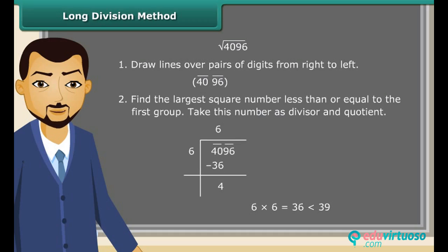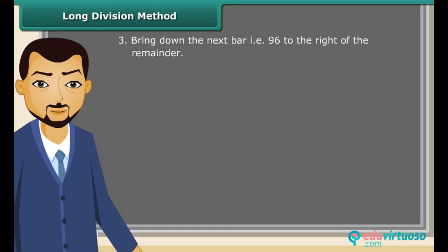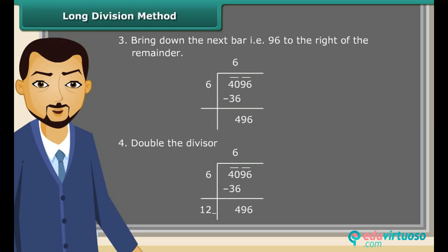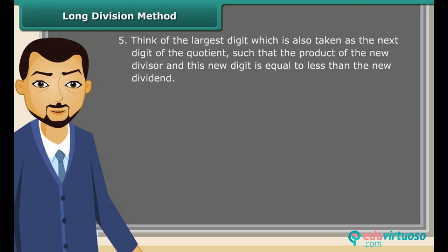After that, bring down the next bar. That is 96 to the right of the remainder. Now, double the divisor. Next, think of the largest digit which is also taken as the next digit of the quotient such that the product of the new divisor and this new digit is equal to or less than the new dividend. Here we have 124 multiplied by 4 equal to 496. Since the remainder is 0, the square root of 4096 is 64.